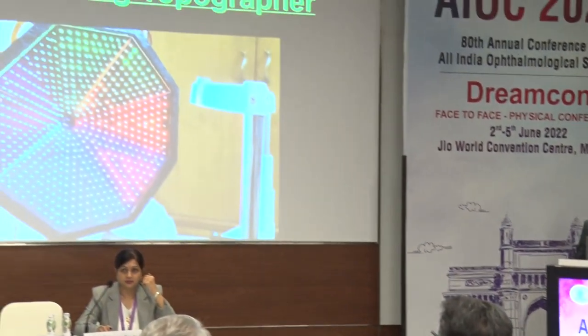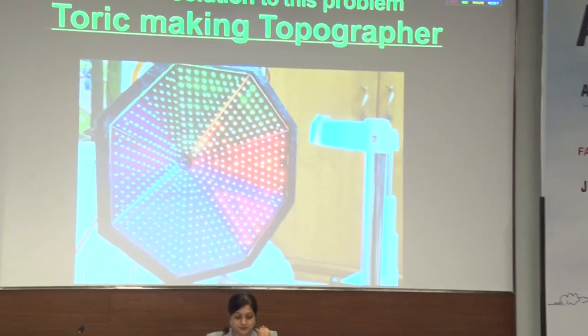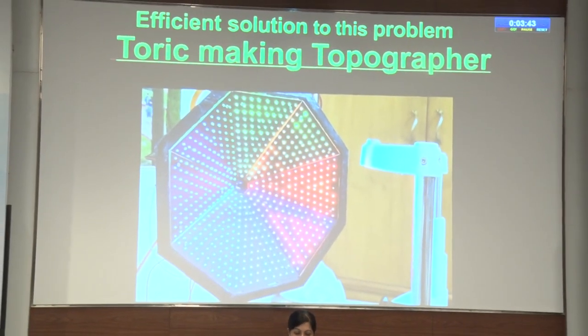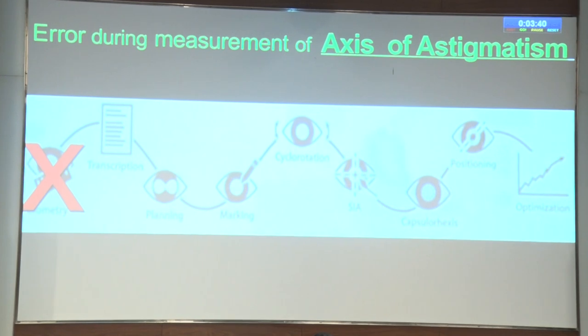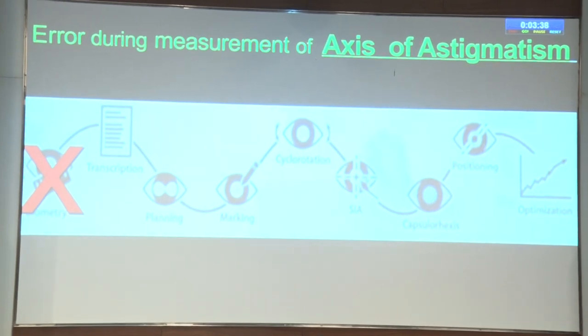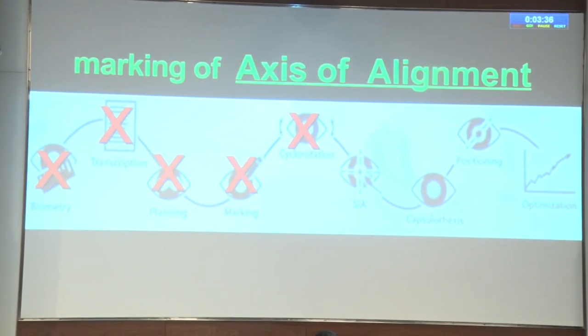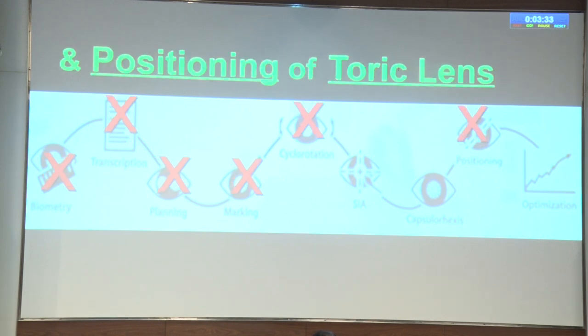In toric lens implantation, today's potential source of error is due to domino effects caused by a multitude of factors which lead to considerable post-operative refractory surprises. I am here to present an efficient solution to this problem: the toric marking topographer. This system prevents errors during measurement of axis of astigmatism, marking of axis of alignment, and positioning of toric lens.